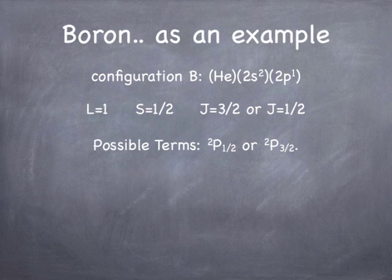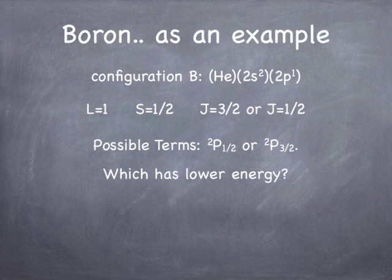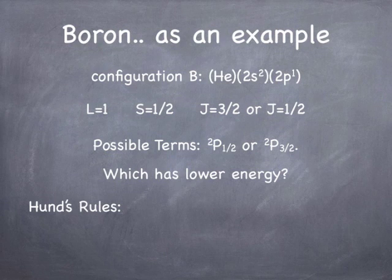Now the question is, of these two term symbols, which one is the ground state? Because remember in the hydrogen atom, energy didn't depend on any of these things, spin, angular momentum, or whatever. But when you have multi-electrons, that electron-electron repulsion means energy now does depend on these properties. So how do we figure out which of these states has the lower energy? That's where Hund's rules come in, and there are three of them.